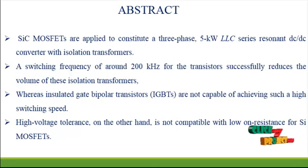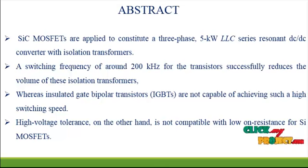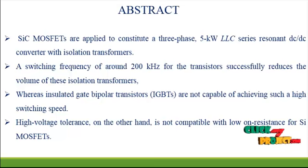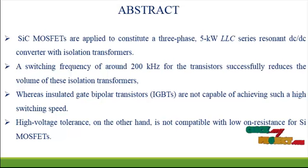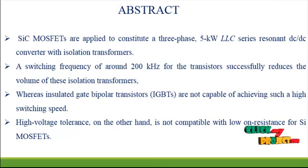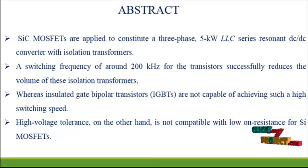In this proposed implementation we use a special MOSFET device called the SiC MOSFET. The main difference between the normal MOSFET and SiC MOSFET is the breakdown voltage rating of 1200V. SiC MOSFETs are applied to constitute a 3-phase 5 kW LLC series resonant DC-to-DC converter with isolation transformers. A switching frequency of around 200 kHz for the transistor successfully reduces the volume of these isolation transformers.